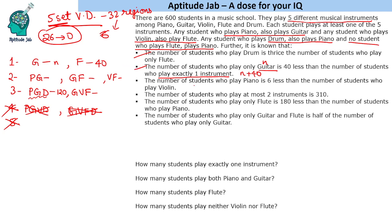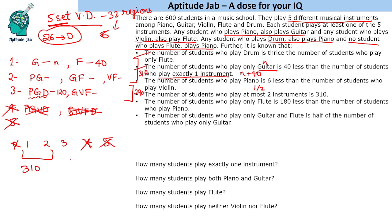The number of students who play at most two instruments is 310. At most two means one or two instruments combined. Since the only categories are one, two, and three instruments, three-instrument players equal 600 minus 310, which is 290. With the one-instrument total as 120 known, the two-instrument group is 170, giving 290 for three instruments. The number of students who play only flute is 180 less than those who play piano. Only flute is 40, so 220 students play piano.